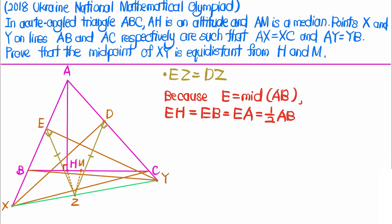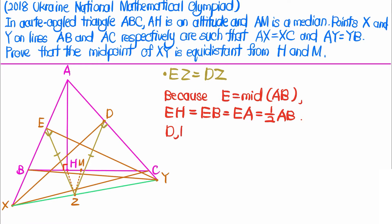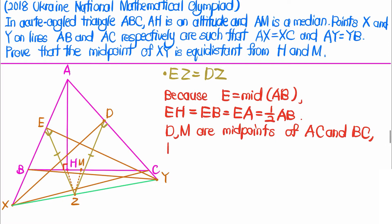Now since D and M are midpoints of AC and BC respectively, DM is the midsegment of triangle ABC, so DM equals half the length of AB. This implies that EH equals DM.